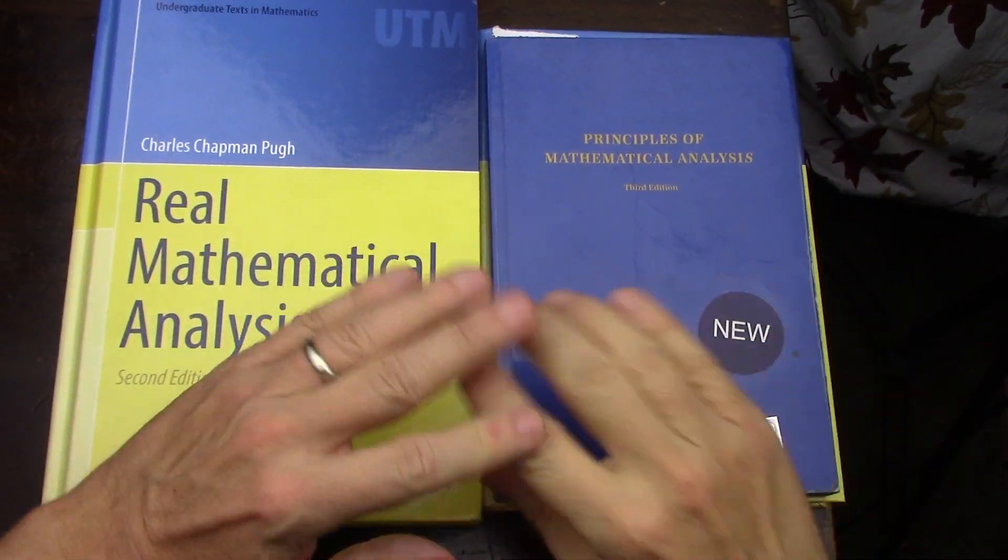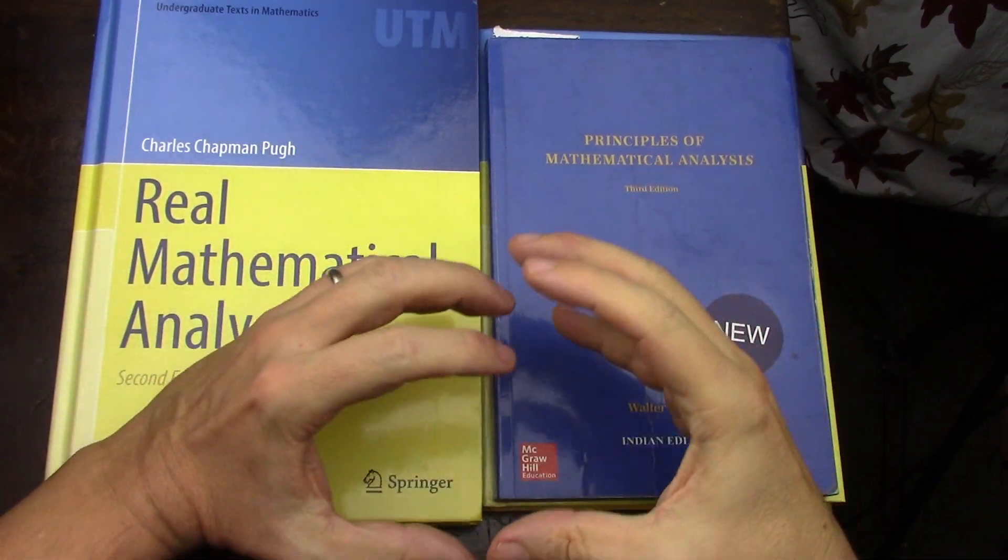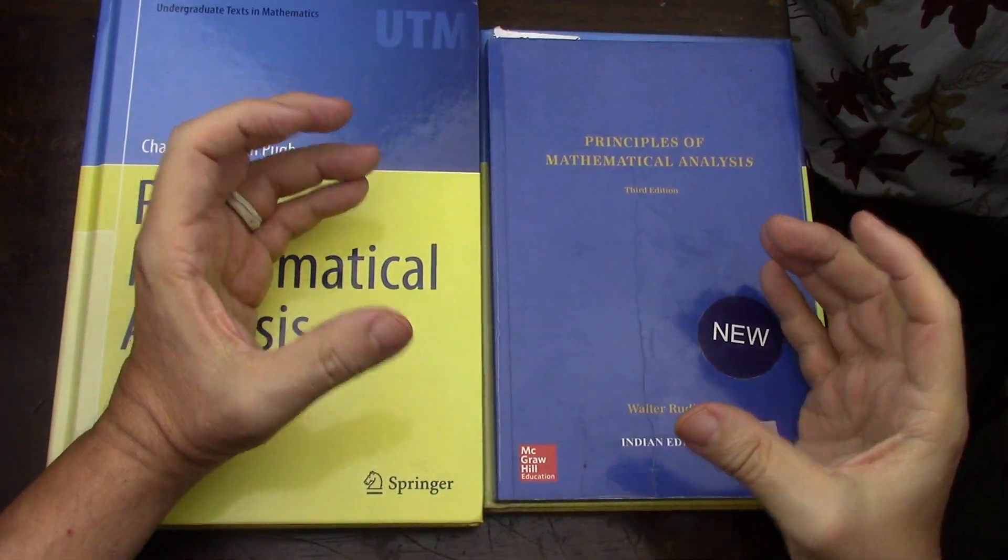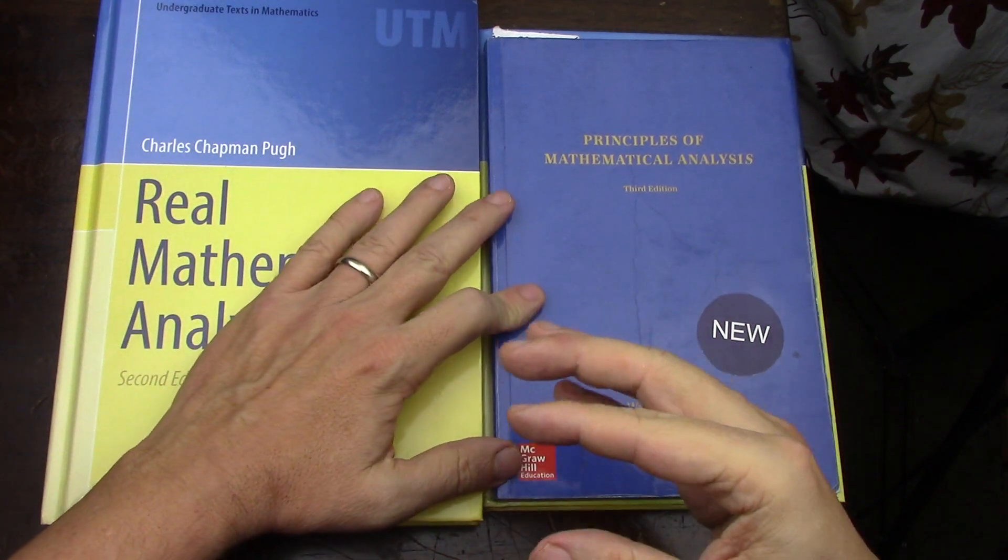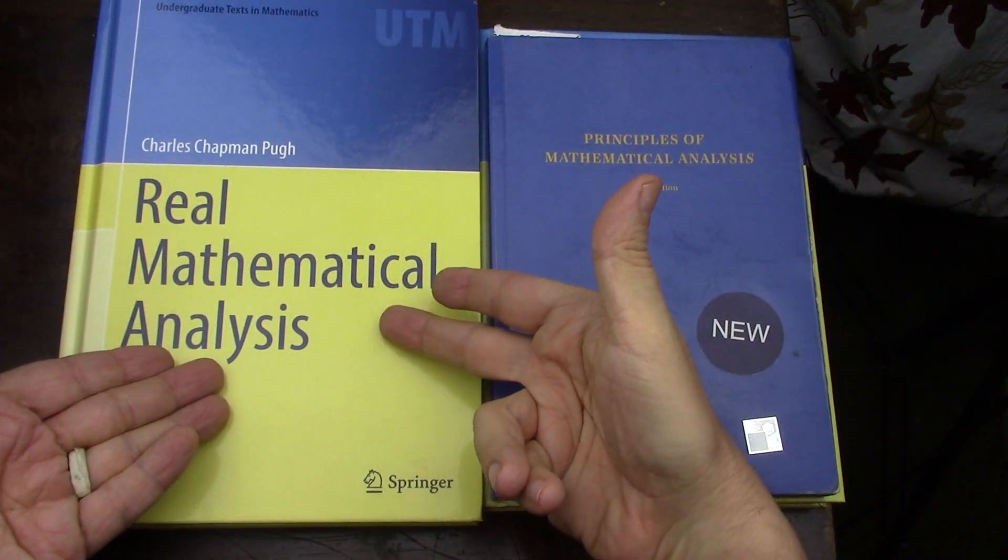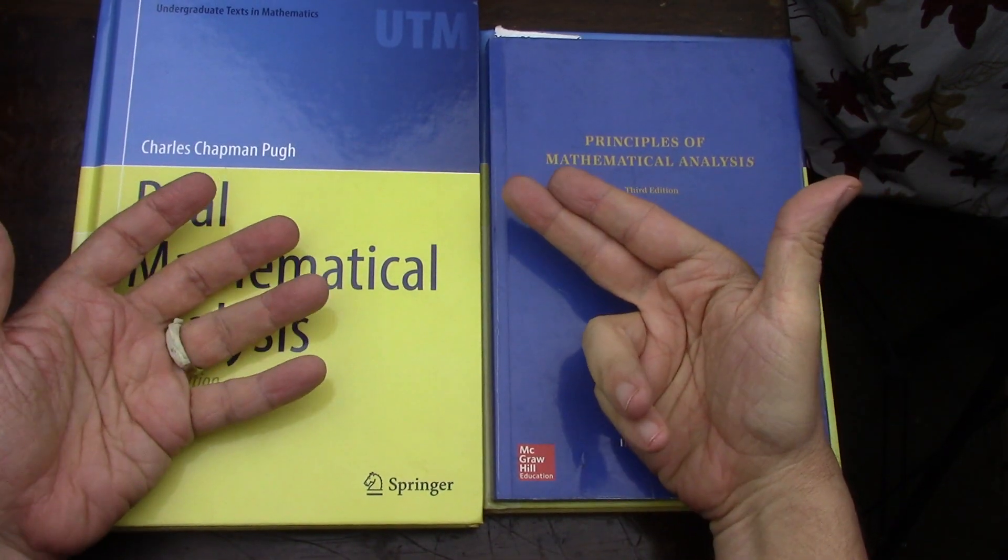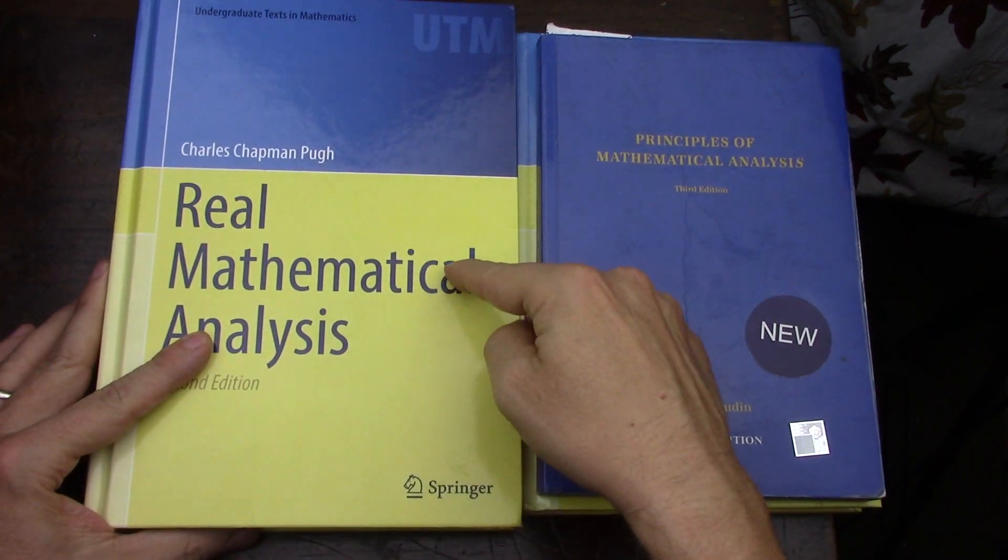And of course the book that I think someday would be great for somebody to write, what I like to call a Baby Rudin for the twenty-first century, somebody out there is going to do it. Maybe Pugh will do it two, three, four editions from now. I think he's gotten the closest.